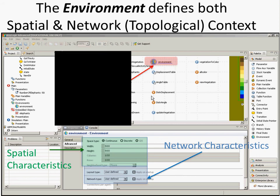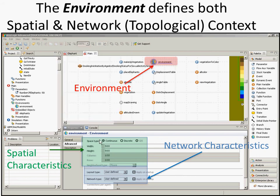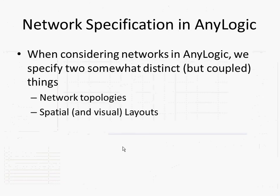What we're going to see is that the network characteristics and the spatial characteristics are mostly independent — they're mostly orthogonal — except in two very important cases within AnyLogic where they influence each other. But for the most part, you can think about two different classes of characteristics being specified from the environment: the topology of the network, who's connected with whom, and the spatial layout, which also impacts the visual layout.